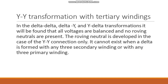Next is the Y2Y transformation with tertiary windings. In delta-to-delta, delta-to-Y, and Y2Y transformations, it will be found that all voltages are balanced and no roving neutrals are present. The roving neutral is developed in the case of Y2Y connection only. It cannot exist when a delta is formed with any three secondary windings or with any three primary windings.